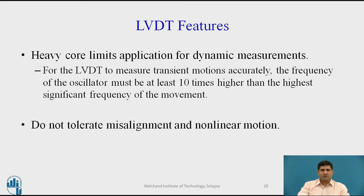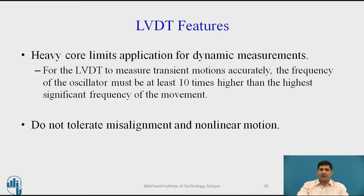Some of the negative features of LVDTs: the heavy core limits its application for dynamic measurement. For transient motions, the frequency of the oscillator must be at least ten times the highest significant frequency involved in the measurement. When it comes to misalignment and non-linear motion, textbooks typically mention that LVDTs are susceptible to misalignment and non-linear motion. However, I have seen manufacturers advertise their LVDT products as being tolerant to misalignment and highly linear — so I leave it to you to judge between what textbooks say and what manufacturers advertise.